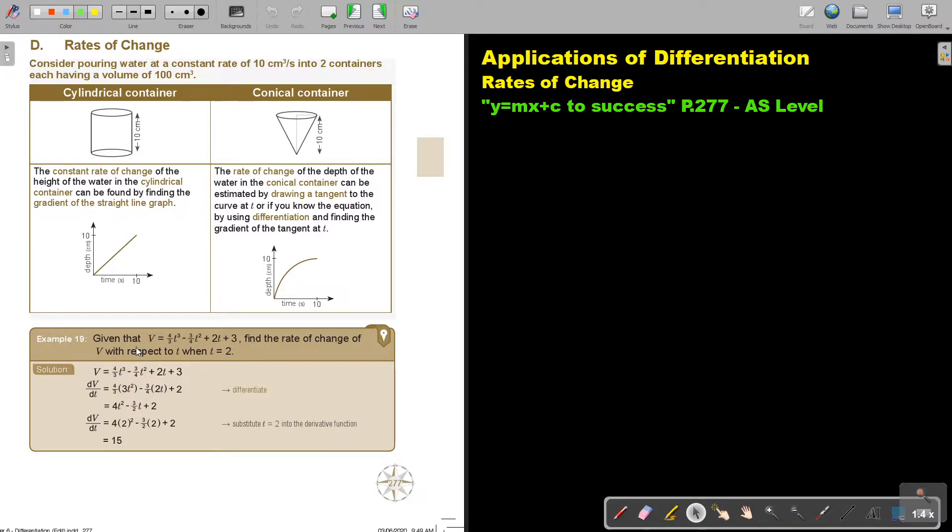Given that this is the formula for the volume, find the rate of change of V with respect to T when T is 2. So, it's actually just finding the gradient of this curve at the point 2. So, what did we do in previous videos? We're first going to differentiate.